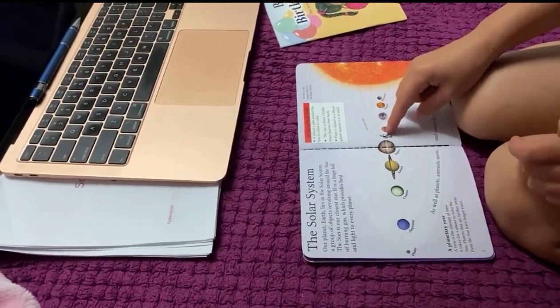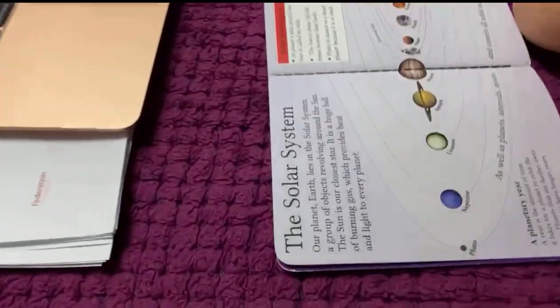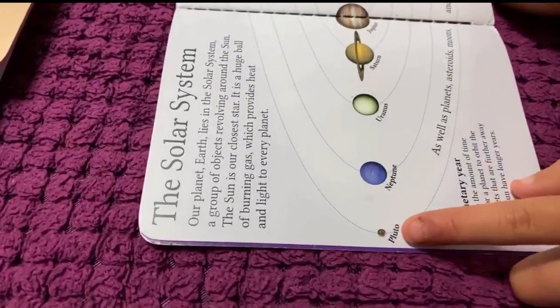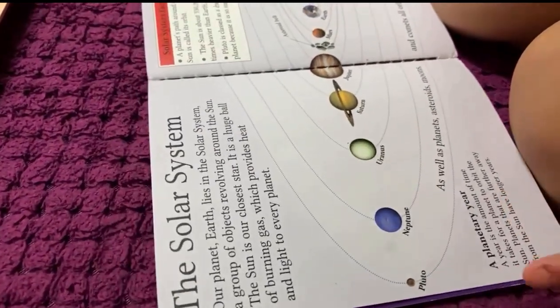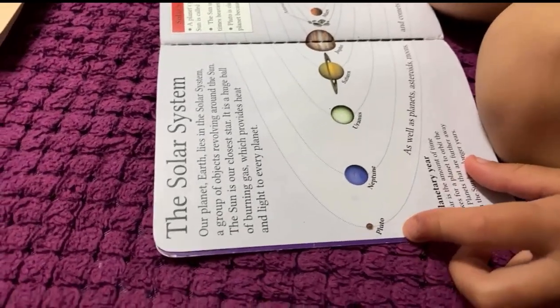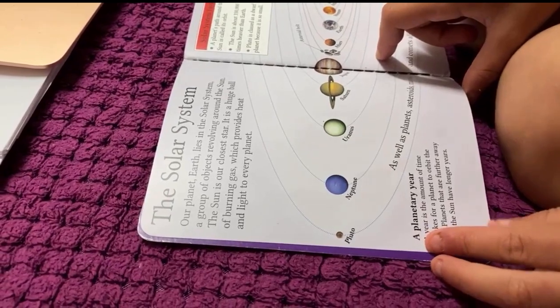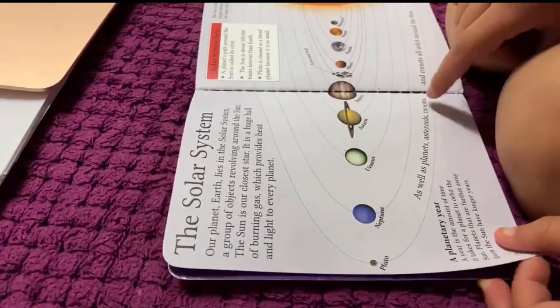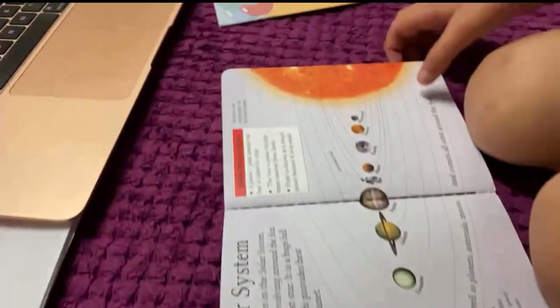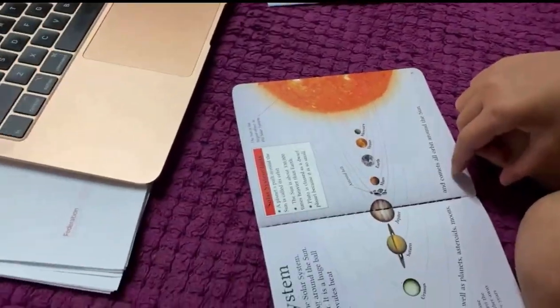Pluto was in the planet anymore. One day, Pluto wasn't a planet anymore, he was just a circle, one tiny circle. The sun was bigger, Jupiter was nearly as tall as the sun.